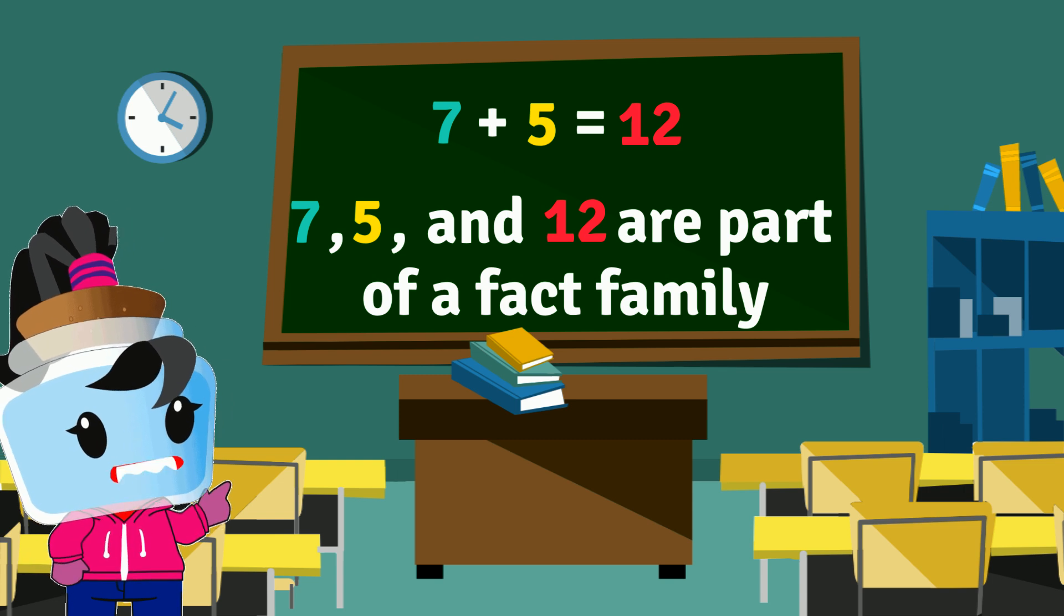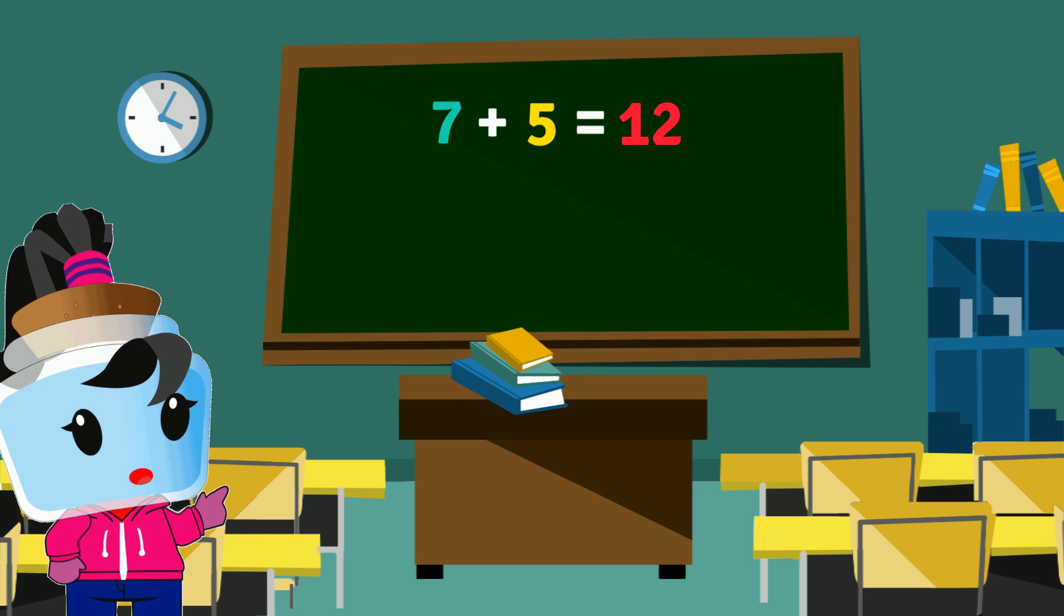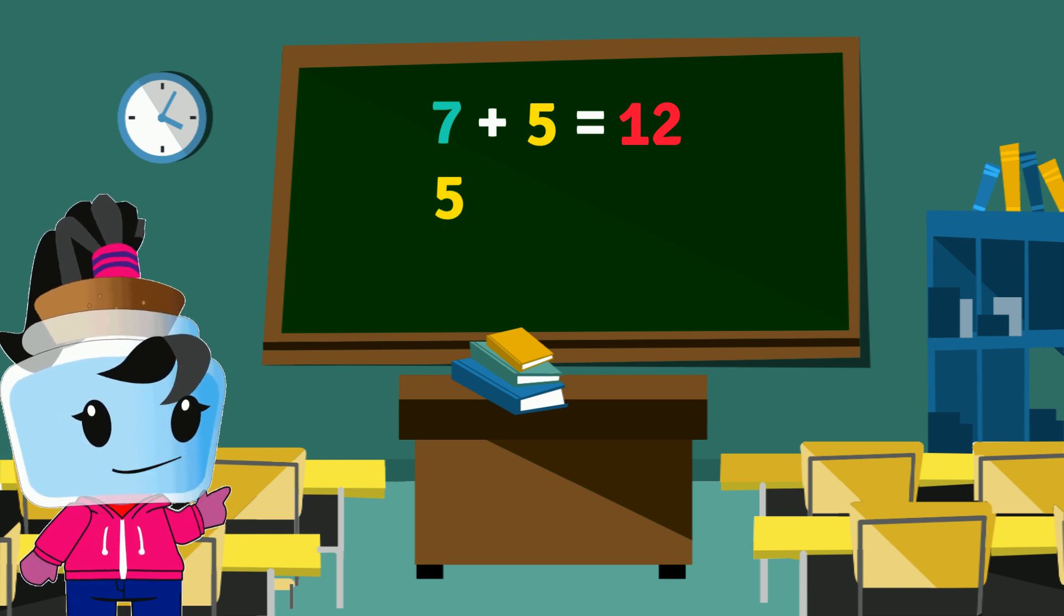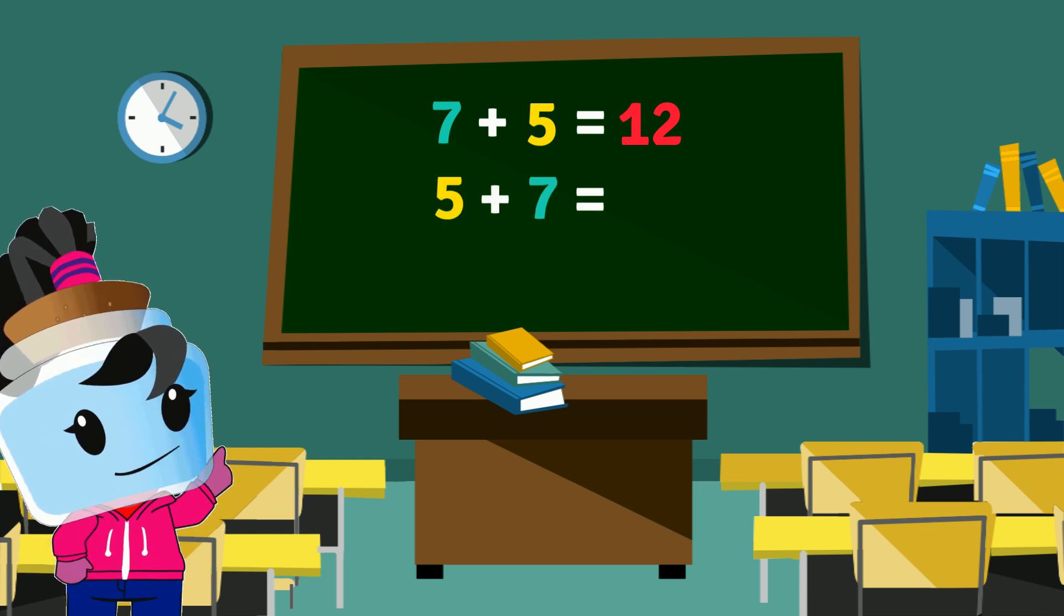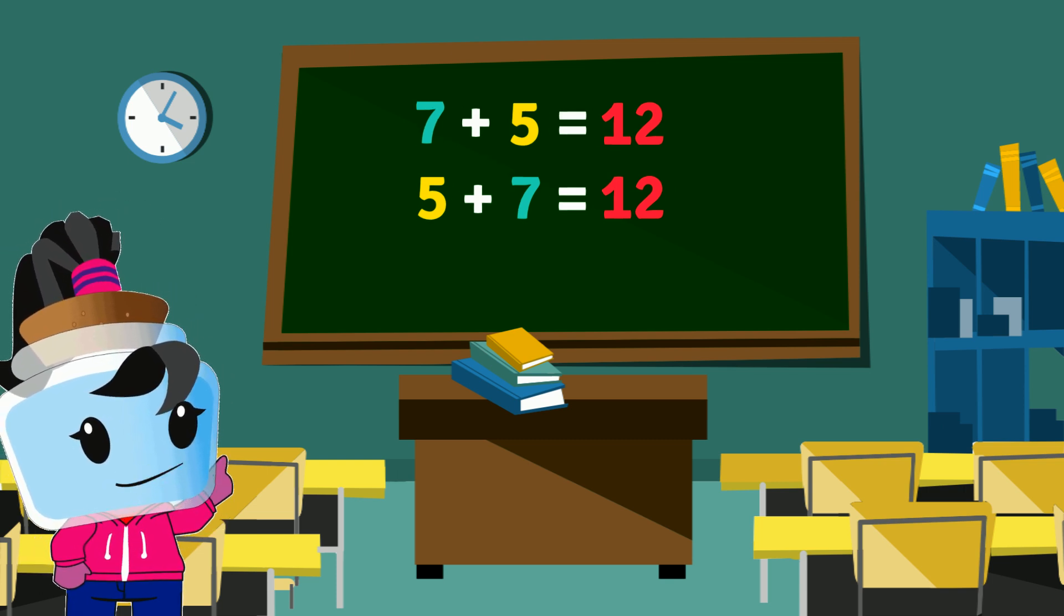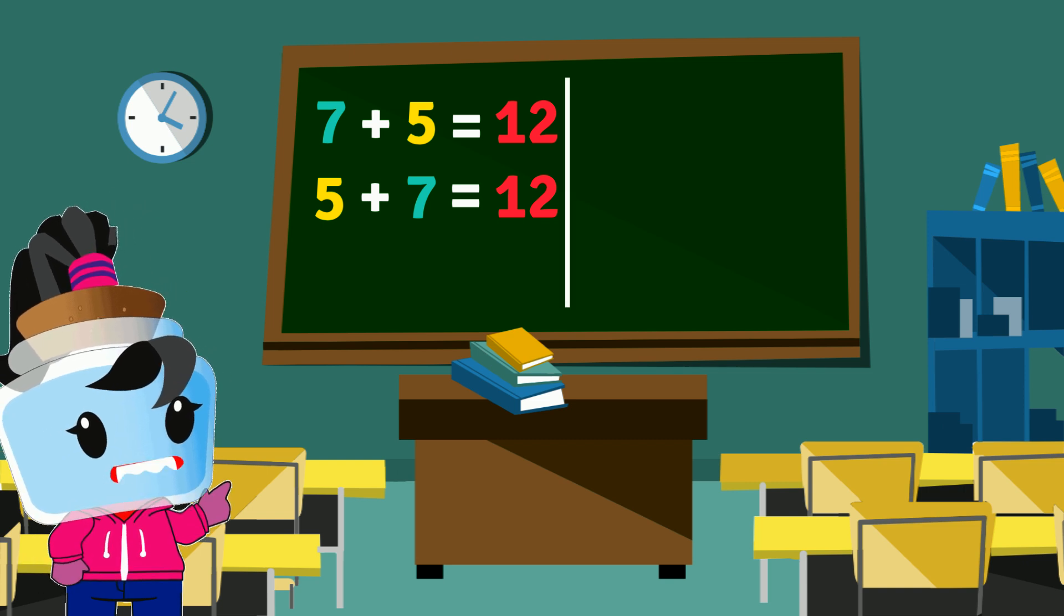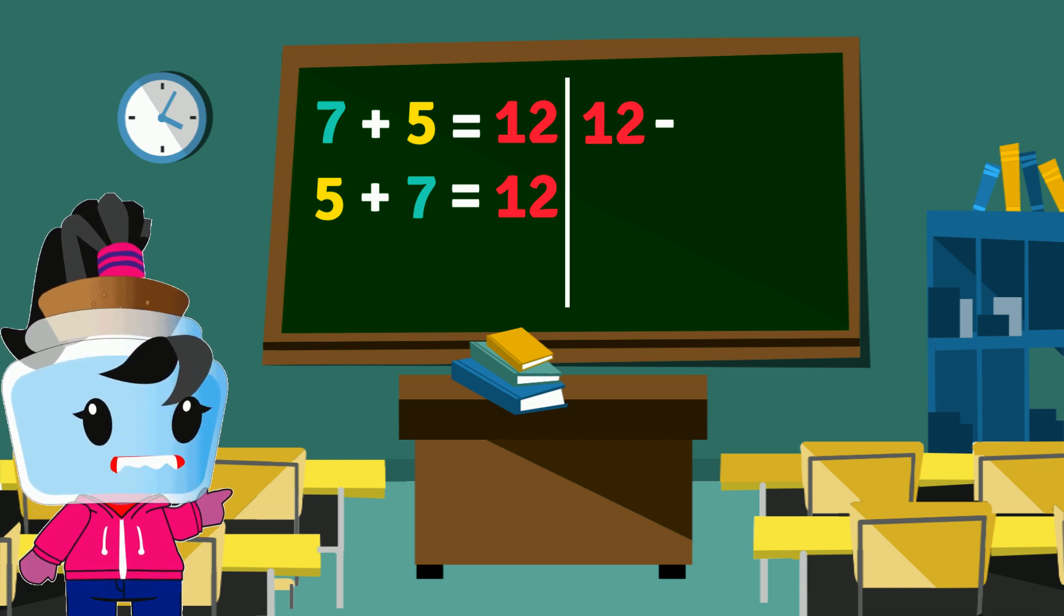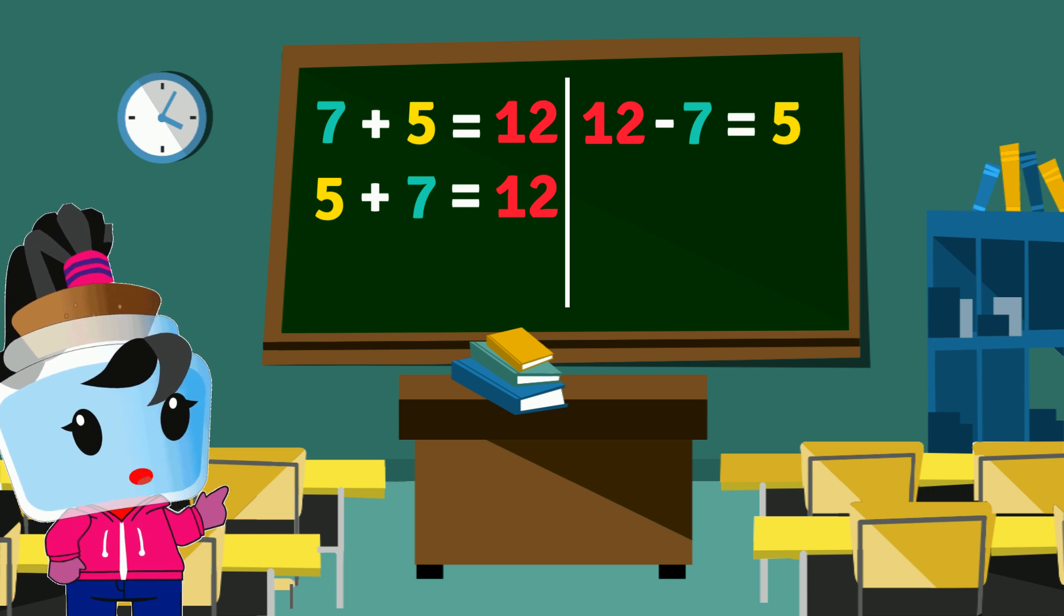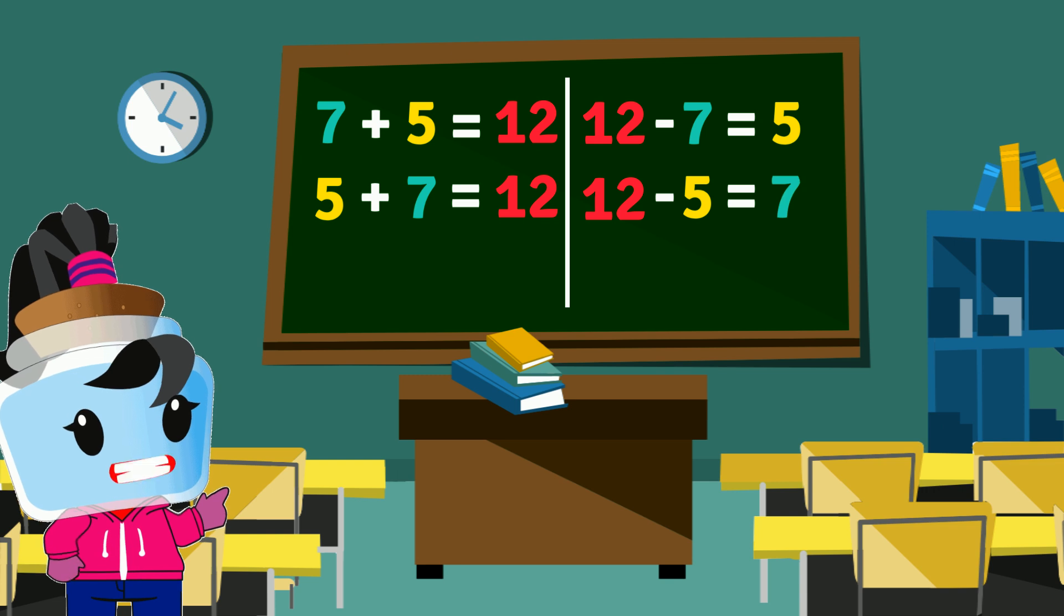We can create another addition sentence from these numbers, which is 5 plus 7 equals 12. We can also create two subtraction sentences, which are 12 minus 7 equals 5, and 12 minus 5 equals 7.